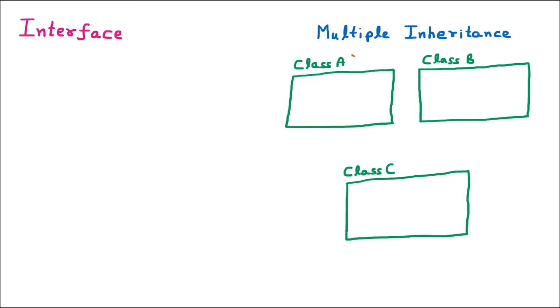Let us suppose we have two classes: class A and class B. Now these two classes we are inheriting into class C. So class A becomes a parent of class C, as well as class B becomes a parent of class C. Such type of inheritance is called multiple inheritance. In C++ that was possible, but here in .NET we cannot do that because there is a problem.